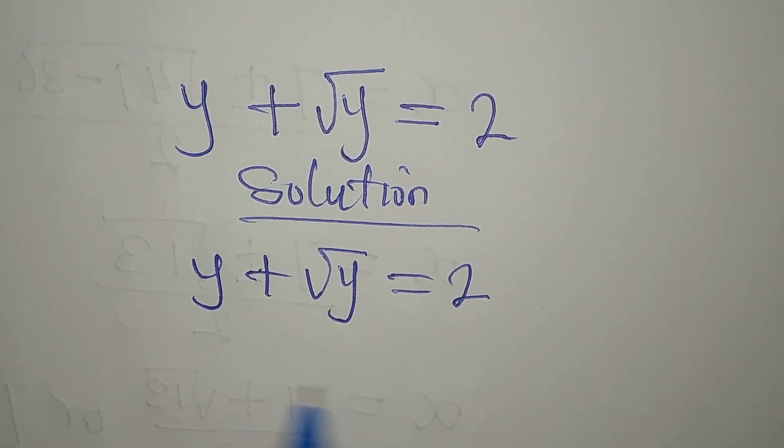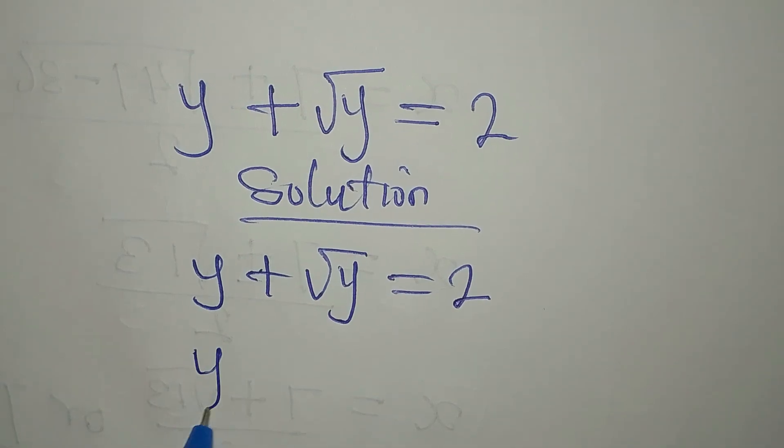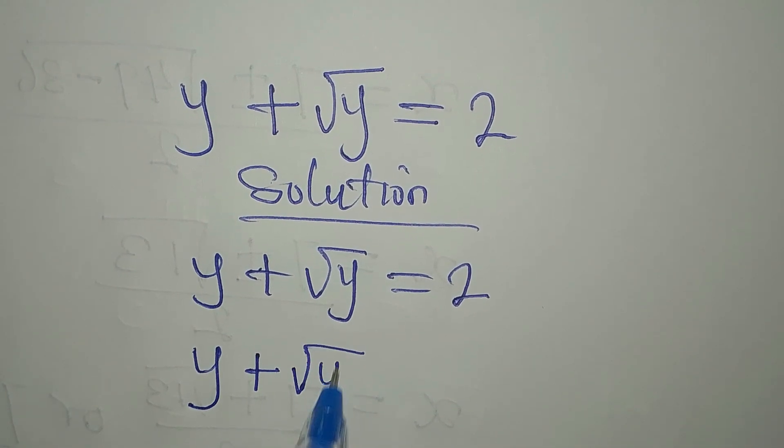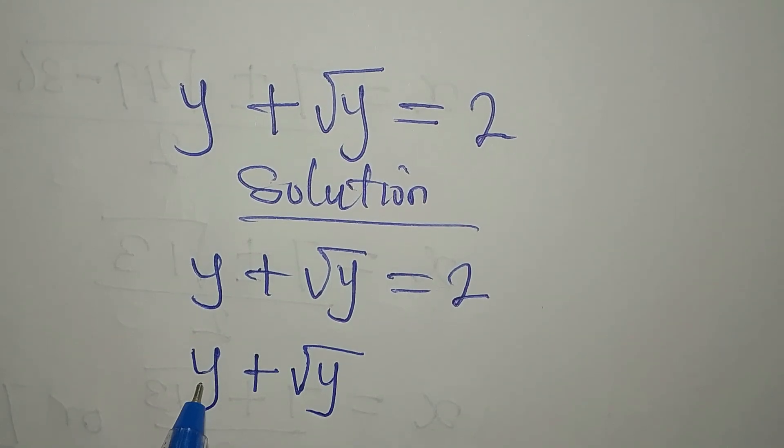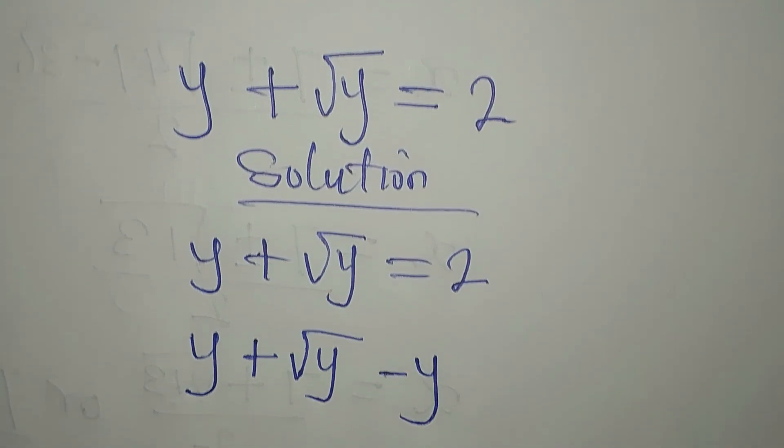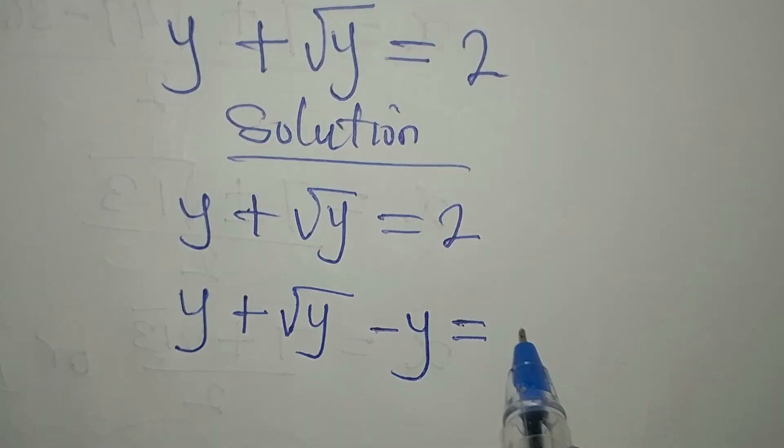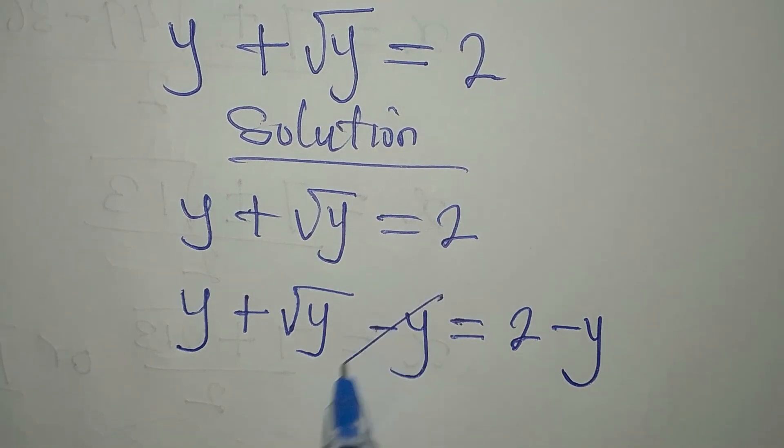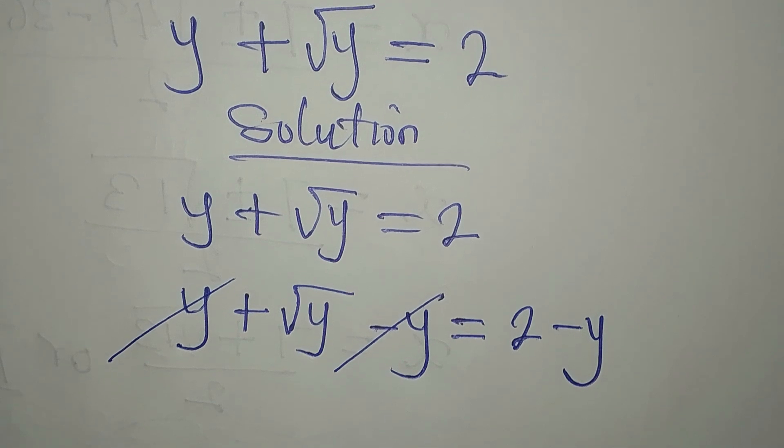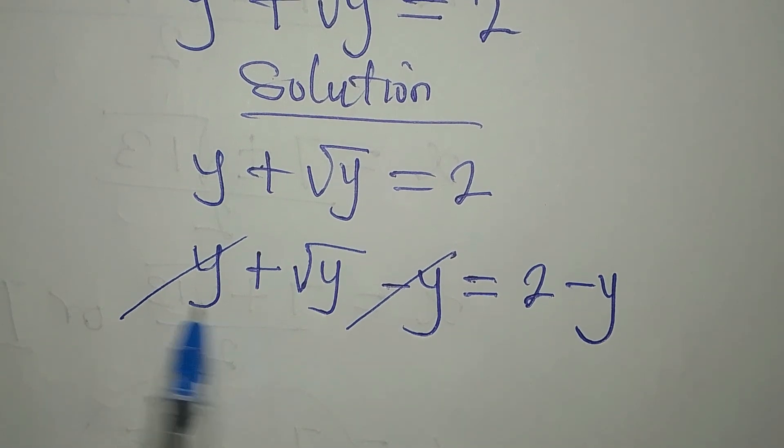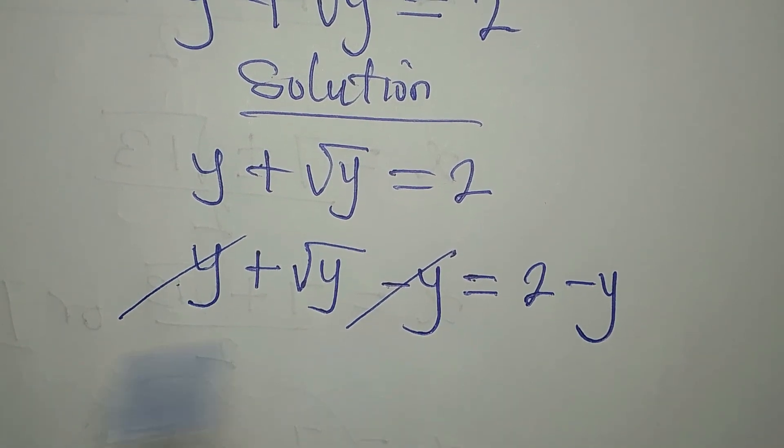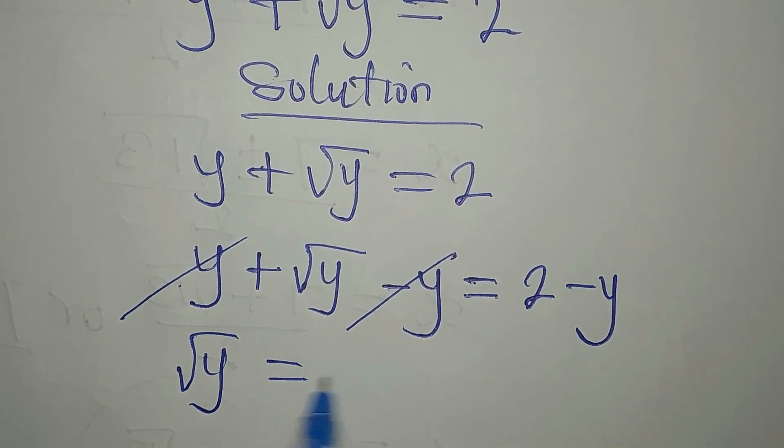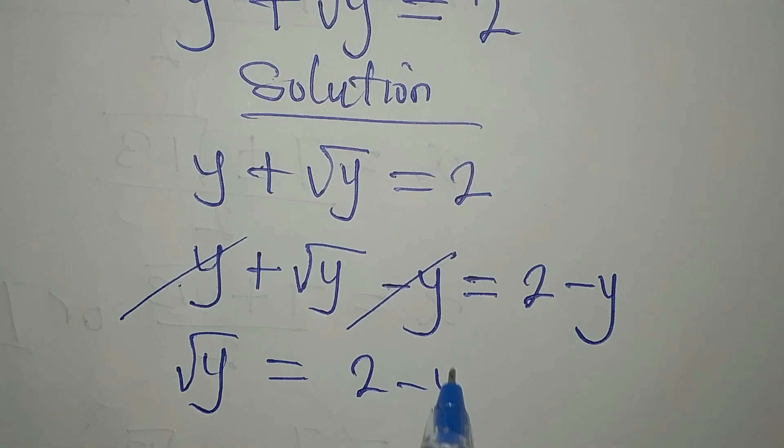Now, what I want to do is to remove this y from here. So I'll have y plus square root of y. Since I want to remove this y, let me subtract y from the left. Then on the right, I'll have 2 minus y as well. Now, this and this can go because they have different signs. Positive, negative. I'll have square root y equals 2 minus y.